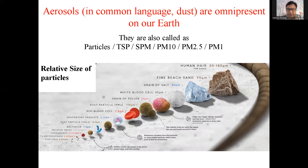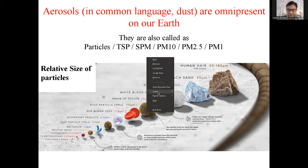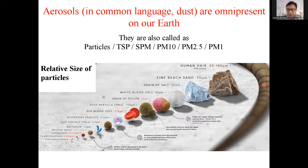To have some idea what size we are talking about — here you see our human hair, whose diameter is about 50 to 180 microns. Then a very fine tan beach sand which is about 90 microns. A grain of salt is 60 microns. White blood cells about 25 microns. A grain of pollen about 15 microns. Dust particles about 10 microns. Red blood cells about 7 to 8 microns. And further down, viruses are about 25 nanometers. So this is the kind of particles we are talking about — these are aerosols.